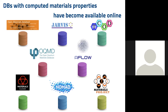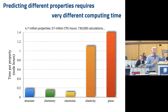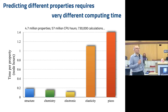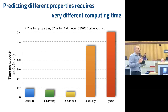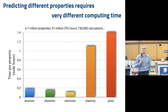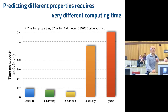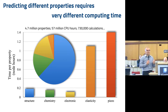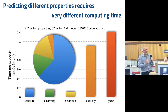One has to realize that when you have to compute a materials property, the time that it takes to compute different properties can be quite different. When you compute properties related to chemistry or to the electronic structure, that's rather small compared to the time needed to compute the elastic properties or the piezoic properties of a system. So it's not surprising that most of the information in the databases is related to those properties that are easy to compute, because it takes a huge amount of CPU hours to compute properties anyway. Those that are more complicated have a limited amount of data.